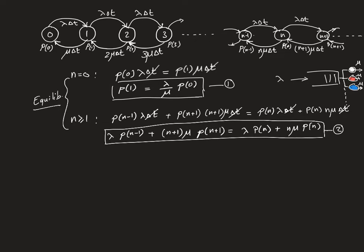At equilibrium we have those two equations, and then the normalization equation says that the summation of all state probabilities from n=0 up to infinity equals 1. The sum of all probabilities must equal 1 since these states represent all possible cases of the random system. To solve this system, we first simplify the equilibrium equations and then substitute into the normalization equation.